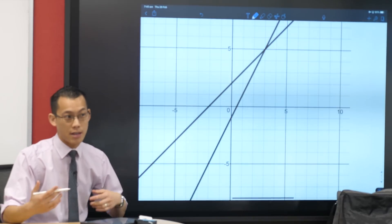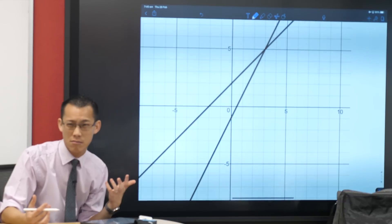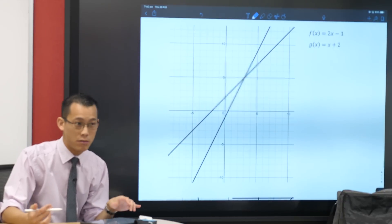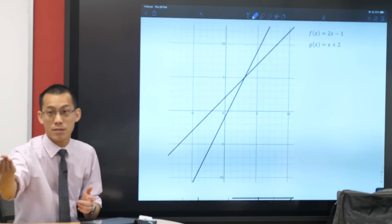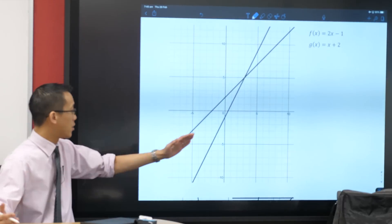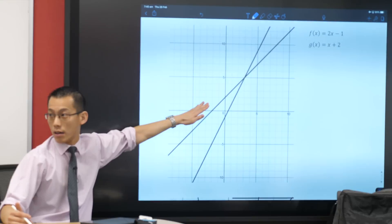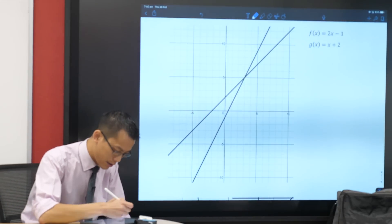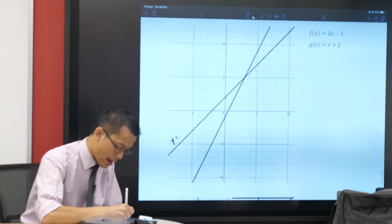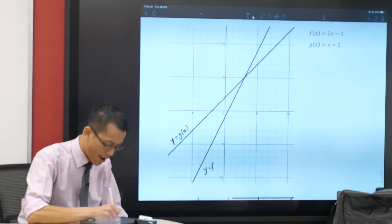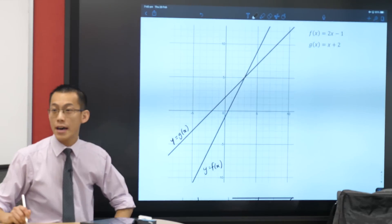Another way you could say this is it's the steeper one. Its gradient is 2 as opposed to the gradient of 1. So this one's steeper, this one's shallower. Let's just label these. This is y equals g of x, and this one is y equals f of x.